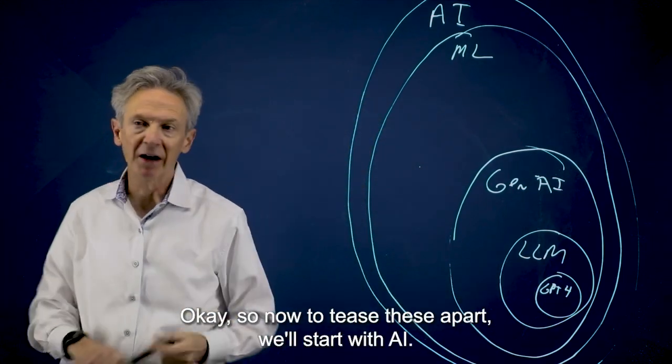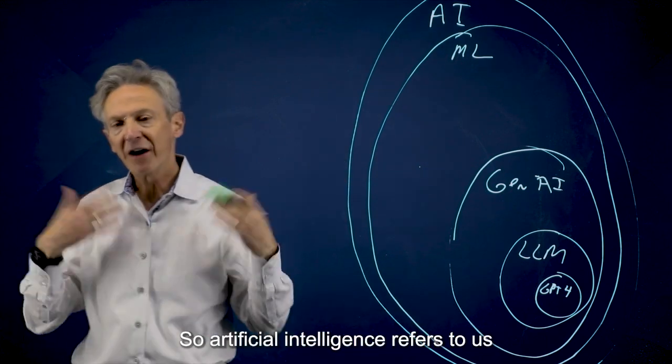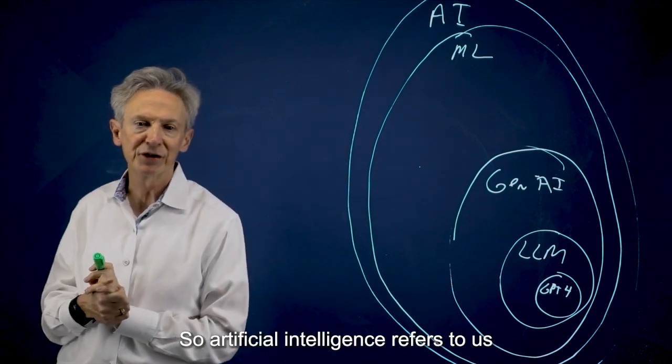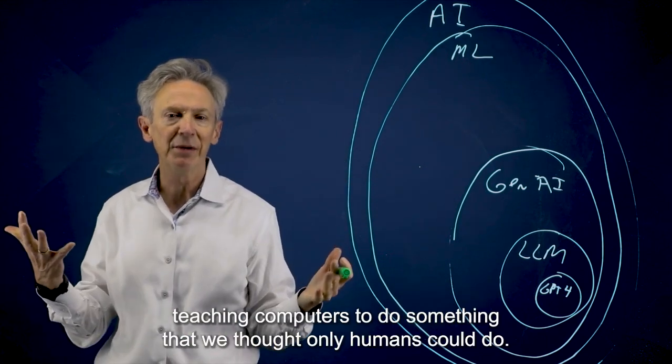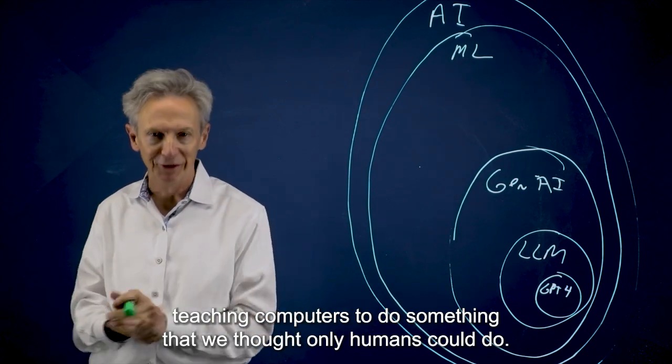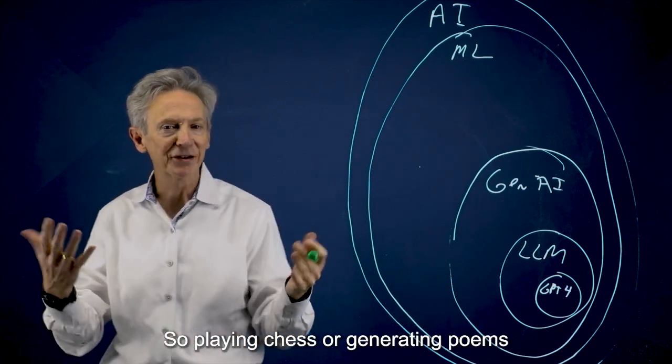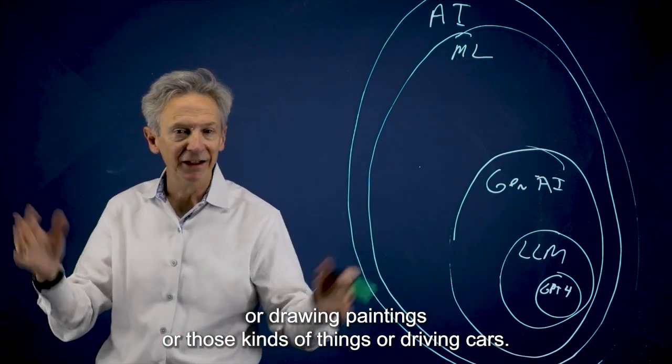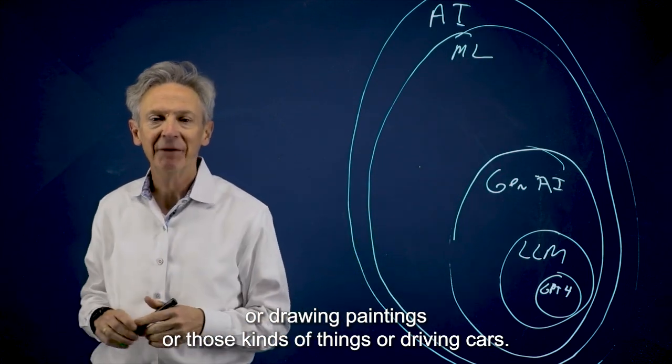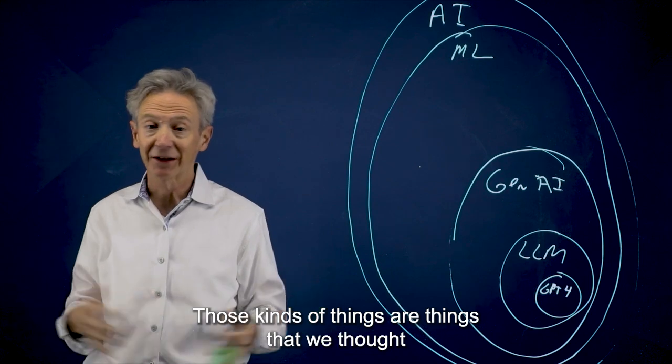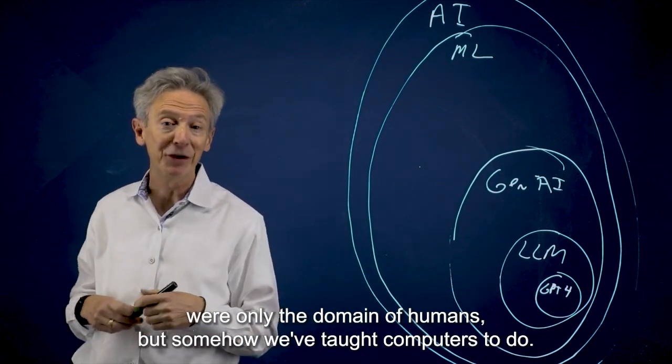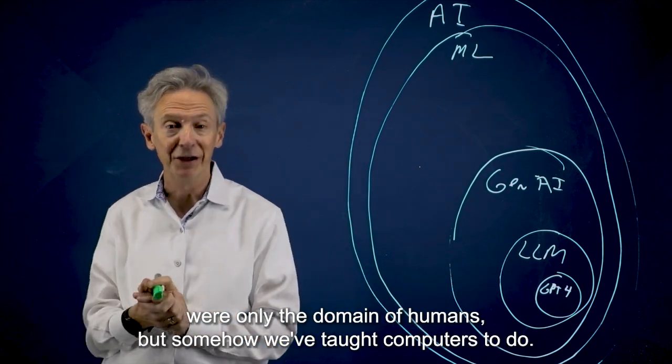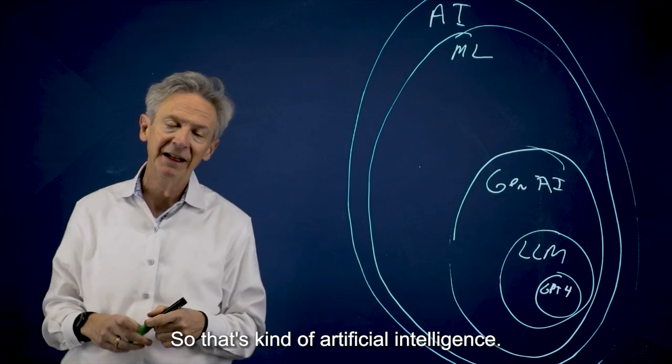Okay. So now to tease these apart, we'll start with AI. So artificial intelligence refers to us teaching computers to do something that we thought only humans could do. So playing chess or generating poems or drawing paintings or driving cars. Those kinds of things are things that we thought were only the domain of humans, but somehow we've taught computers to do. So that's artificial intelligence.